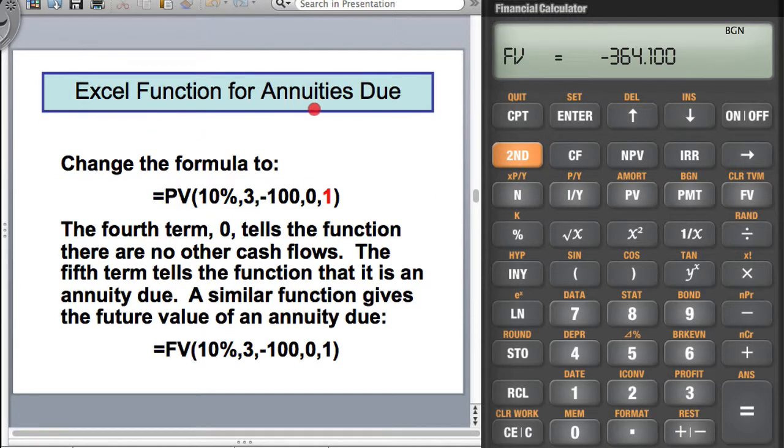You have Excel functions for annuity dues too and you can calculate the present value or the future value. Here's the interest rate, here's the number of periods and here's your annuity amount. And then there are two extra arguments, the zero tells the function that there are no other cash flows and the fifth term tells that it's an annuity due. If it's not an annuity due, you just put a zero there.